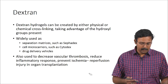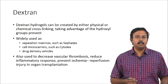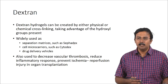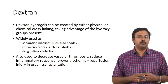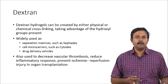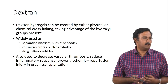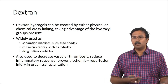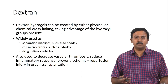Dextran is widely used in separation matrices — Sephadex is one common example. It is also used as cell microcarriers, the commercial product called Cytodex, which is used for cell delivery. It has also been explored as drug delivery vehicles. Dextran has shown very good hemocompatibility. It has been used for reducing vascular thrombosis, reducing inflammatory responses, and to prevent ischemia and reperfusion injury during organ transplant. Because of this promise and biocompatibility, people have tried to explore dextran for tissue engineering applications as well.